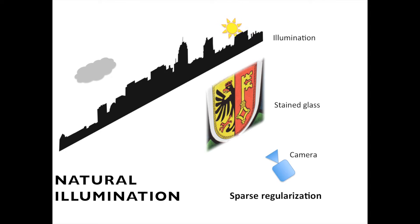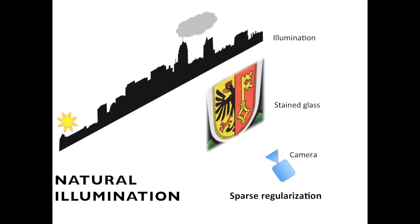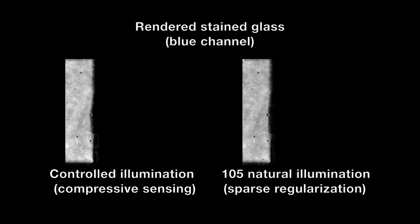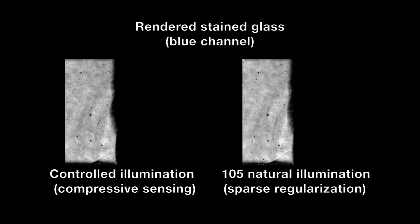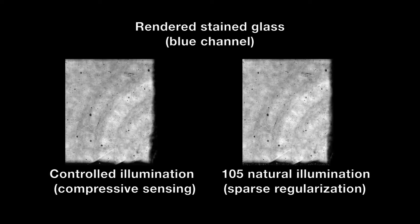Otherwise, if only natural illumination is available, we employ a new sparse recovery framework where the dictionary learned in the laboratory is used as a powerful regulariser. This allows us to retrieve a very accurate and realistic light transport matrix for the stained glass window, as you can see here.